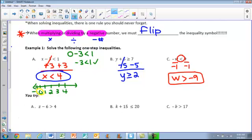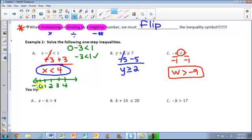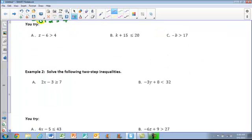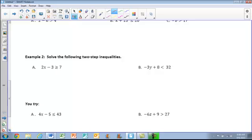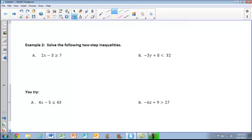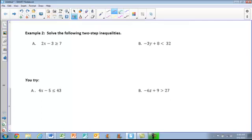All right, let's try and get on to a couple more complicated problems. If we take a look at example 2, now we have two-step inequalities. Once again, we're solving these just like we would solve equations. We just need to make sure that we follow our rule. We multiply or divide by a negative, we flip that symbol.